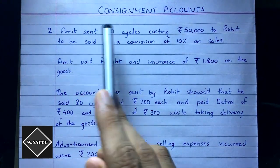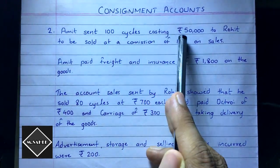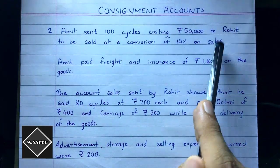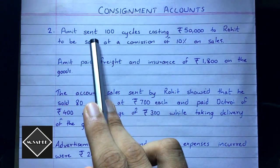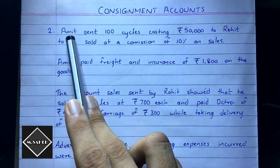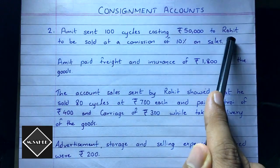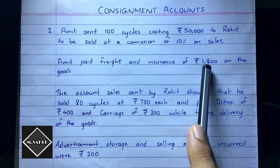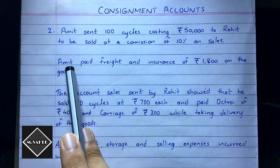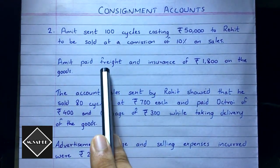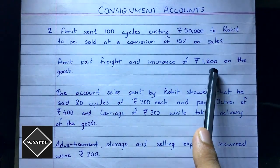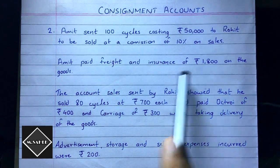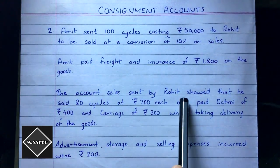Moving on to the question: Amit sent 100 cycles costing rupees 50,000 to Rohit, to be sold at a commission of 10% on sales. Here Amit is the consignor and Rohit is the consignee. Amit paid freight and insurance of rupees 1,800 on the goods — expenses incurred to send the goods.